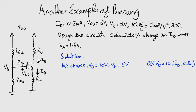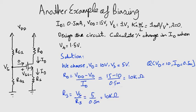Now we find the values of RD and RS. Both come out to be 10 kilo ohms.